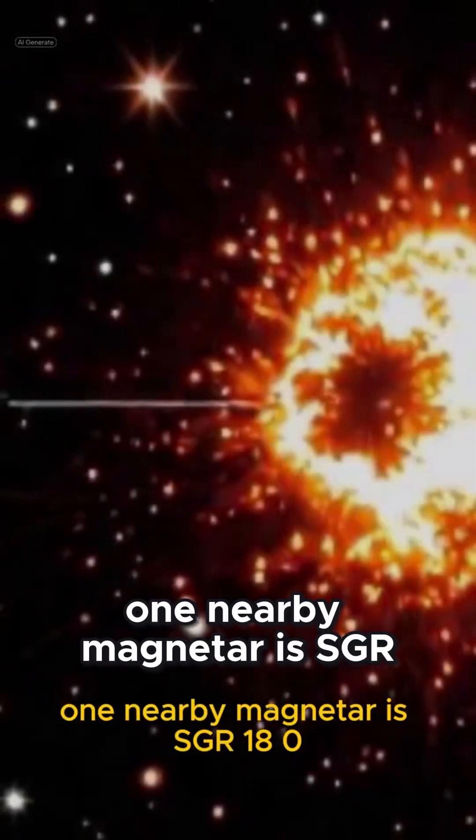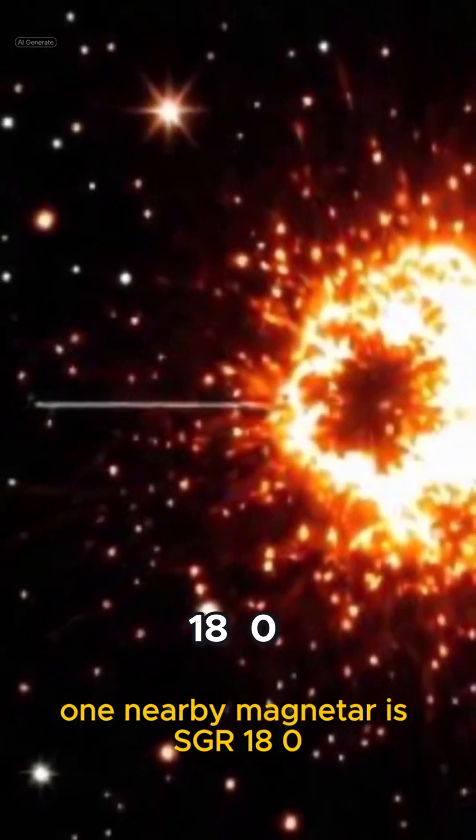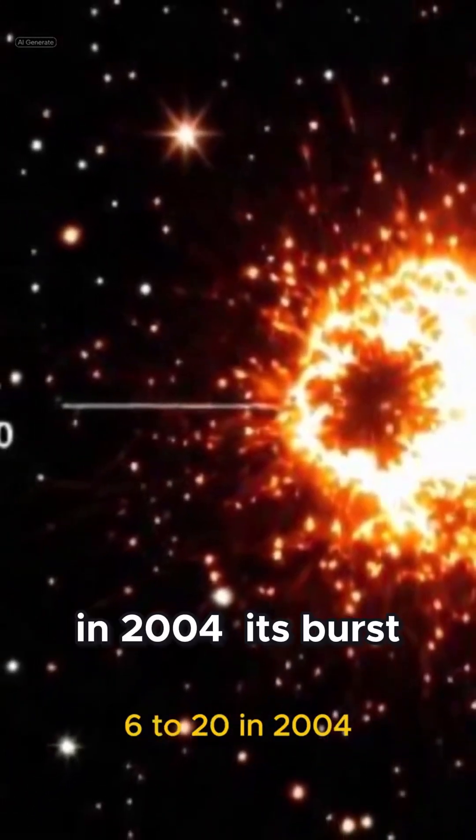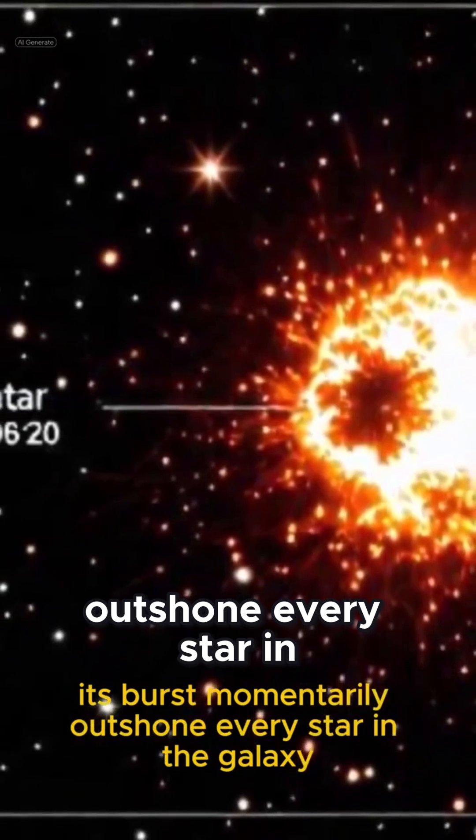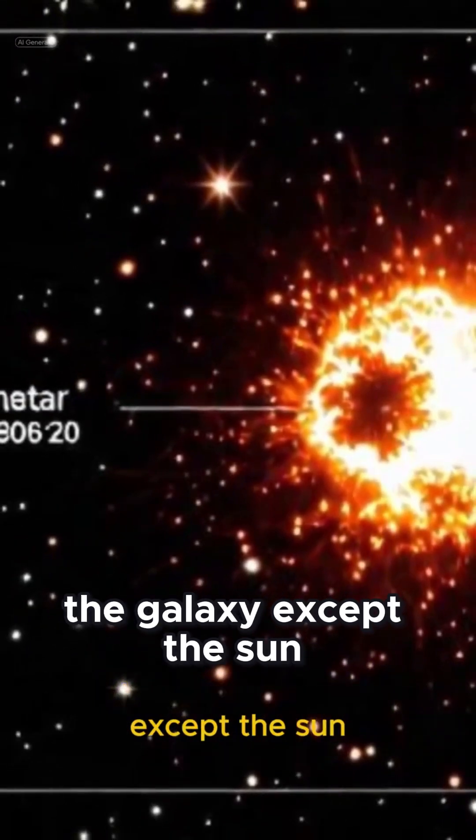One nearby magnetar is SGR 1806-20. In 2004, its burst momentarily outshone every star in the galaxy except the sun.